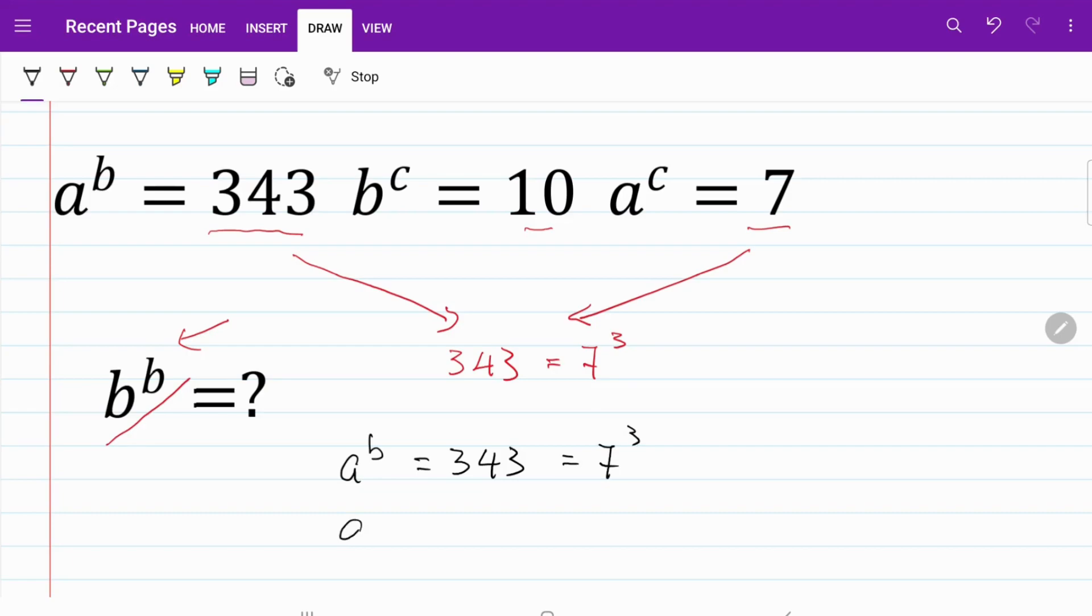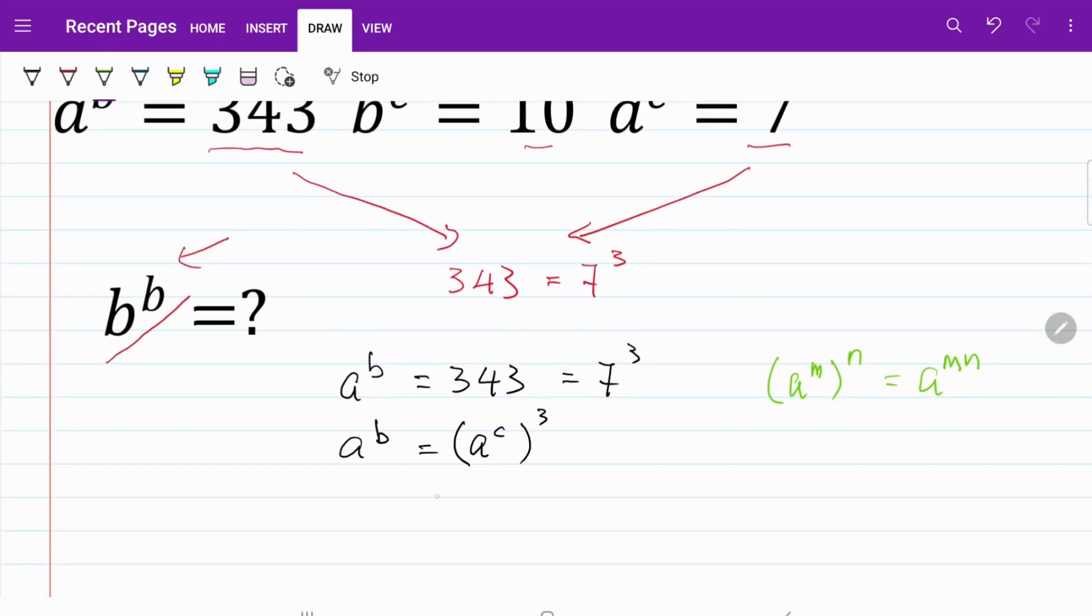So a^b can also be expressed as (a^c) cubed using the rule of indices which states (a^m)^n can be described as a^(mn). So I now have a^b to be equal to a^(3c).